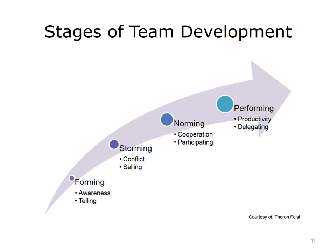Forming, storming, norming, and performing is a model of group development first proposed by Bruce Tuckman in 1965. He maintained that these phases are all necessary and inevitable for a team to grow, tackle challenges, address problems, find solutions, plan work, and deliver results. Teams typically progress through these stages. During the forming stage, behavior is largely driven by a desire for acceptance, conflict is avoided, routines and organization are the focus, and individuals are becoming aware of each other. The project manager focuses on telling team members what to do and how to do it.